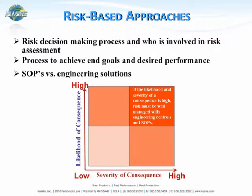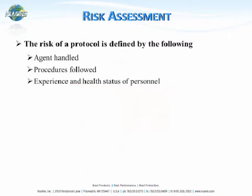When looking at risk, there are different risk-based approaches to take. The biggest things are to look at the likelihood of the consequence and the severity of the consequence. If both the likelihood and severity are high, then risk must be well-managed with engineering controls and standard operating procedures. A risk assessment has several factors: the pathogen or agent handled, the procedures to be used, and the experience and health status of the personnel performing the work.